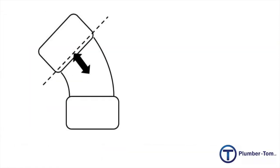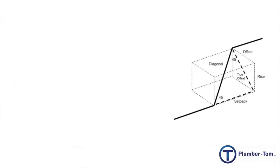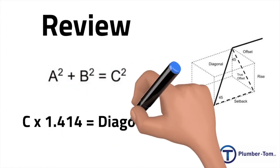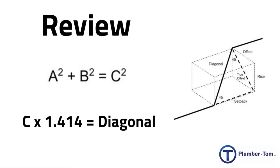Now when you are actually cutting the pipe, make sure to subtract the fitting allowance from the diagonal for each of those 45-degree fittings on either side. To review: when calculating a rolling offset, we first take our offset and our rise — that would be A and B — and put them through the Pythagorean theorem: A² + B² = C². Once we have calculated C, we multiply that by 1.414 to get our diagonal, which is where the pipe actually runs. That is how you calculate a rolling offset.